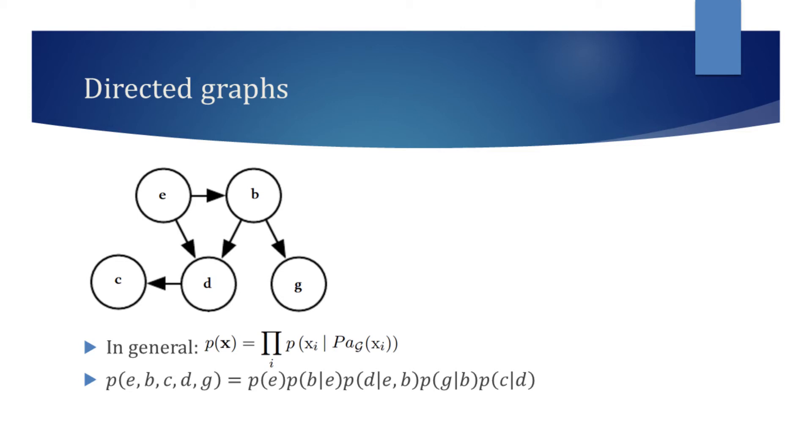First, look at the node e. We see that it has no arrows directed towards it, meaning it has no parent nodes, so we just write the probability of e. Looking at the node b, it has an arrow directed towards it from the node e, so we write the probability of b given e.